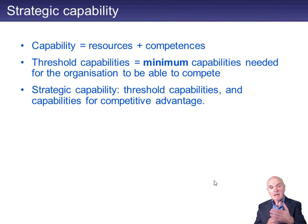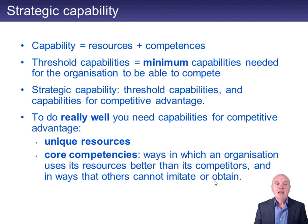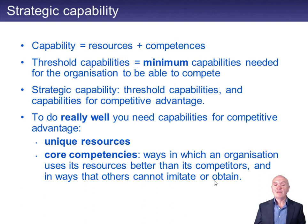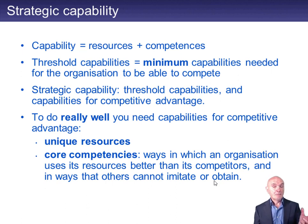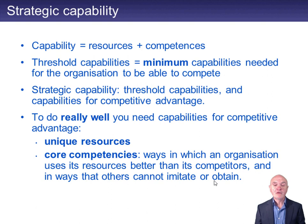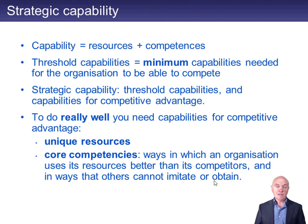The extra over and above the threshold capabilities can come from two sources: either from special resources or special competences. To get these capabilities for competitive advantage, either you have unique resources — resources that other people can't copy — because if they could go down to the local resource shop and buy them, you wouldn't have that advantage anymore. Or you have what's called a core competence: a way in which you can use your resources better than other people can.